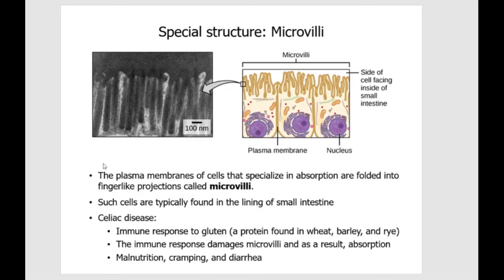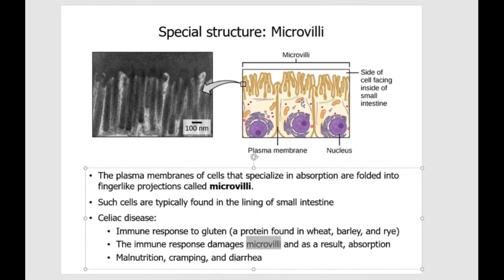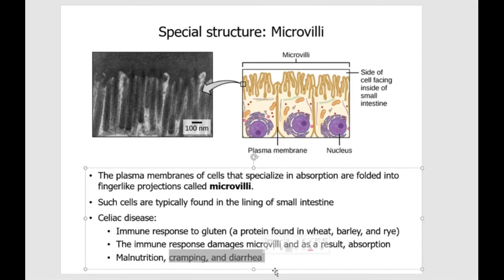People who have celiac disease have a body that mounts a very strong immune response to gluten. When they eat something that has gluten, their body thinks it's a foreign invader and starts an immune response. In that fight against gluten, the microvilli inevitably get damaged and destroyed. Without microvilli, you can't really absorb nutrients and your ability to break down macromolecules also decreases, resulting in a wide range of symptoms, including malnutrition, cramping, and diarrhea.